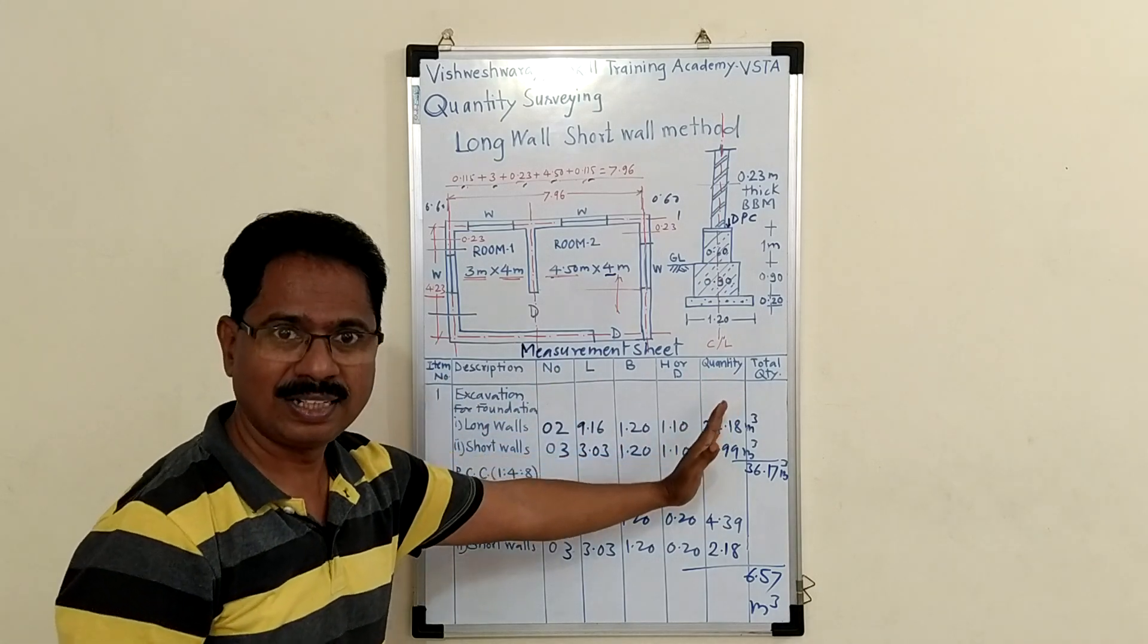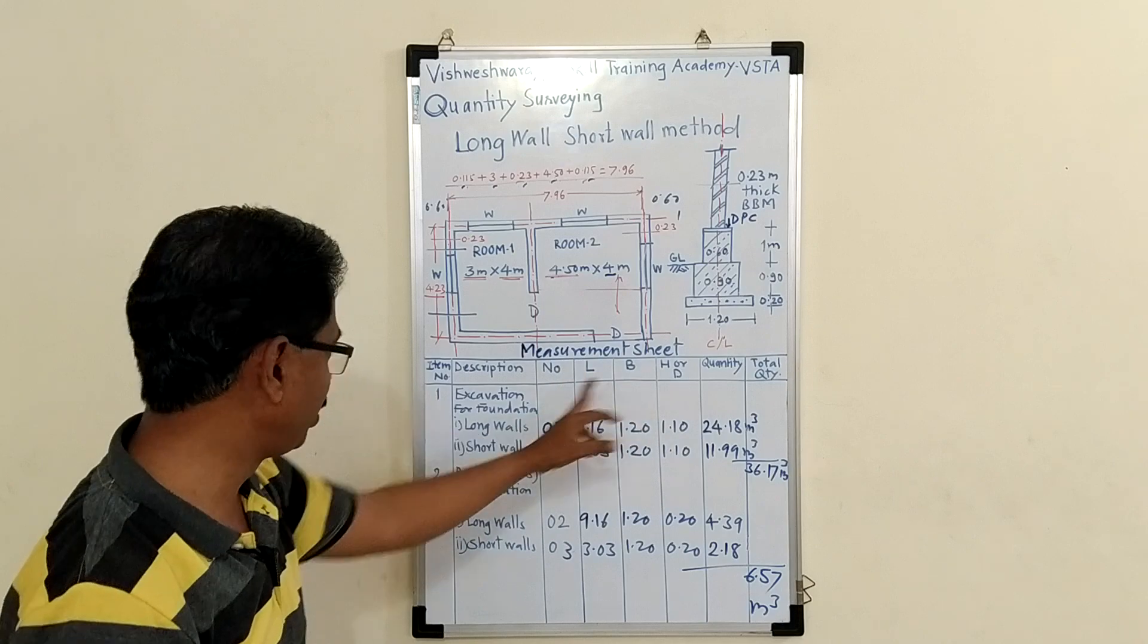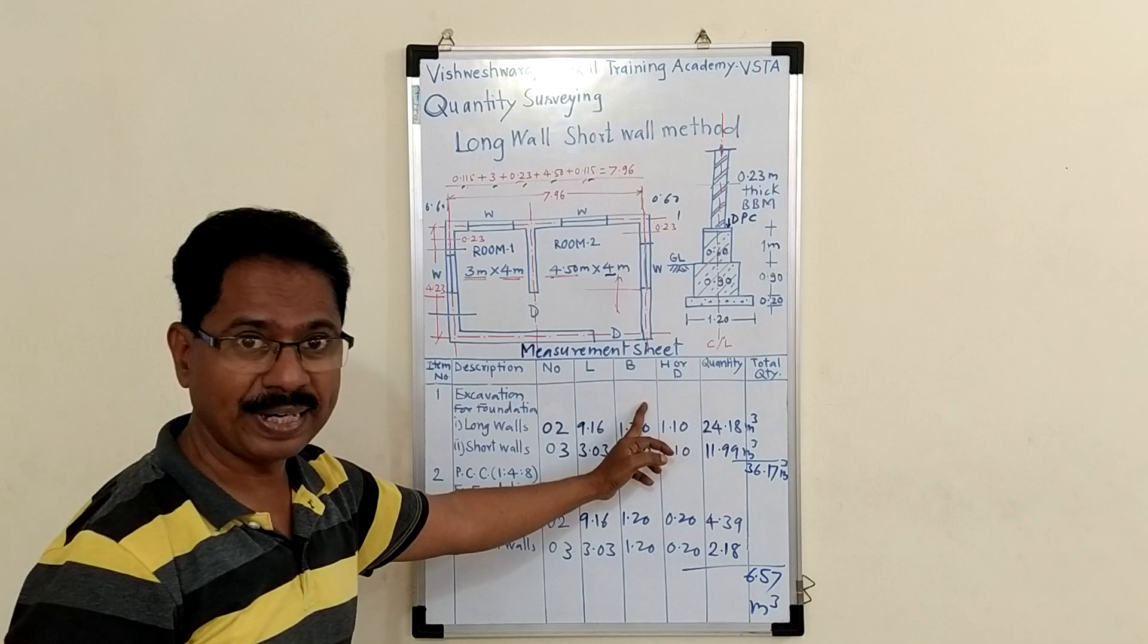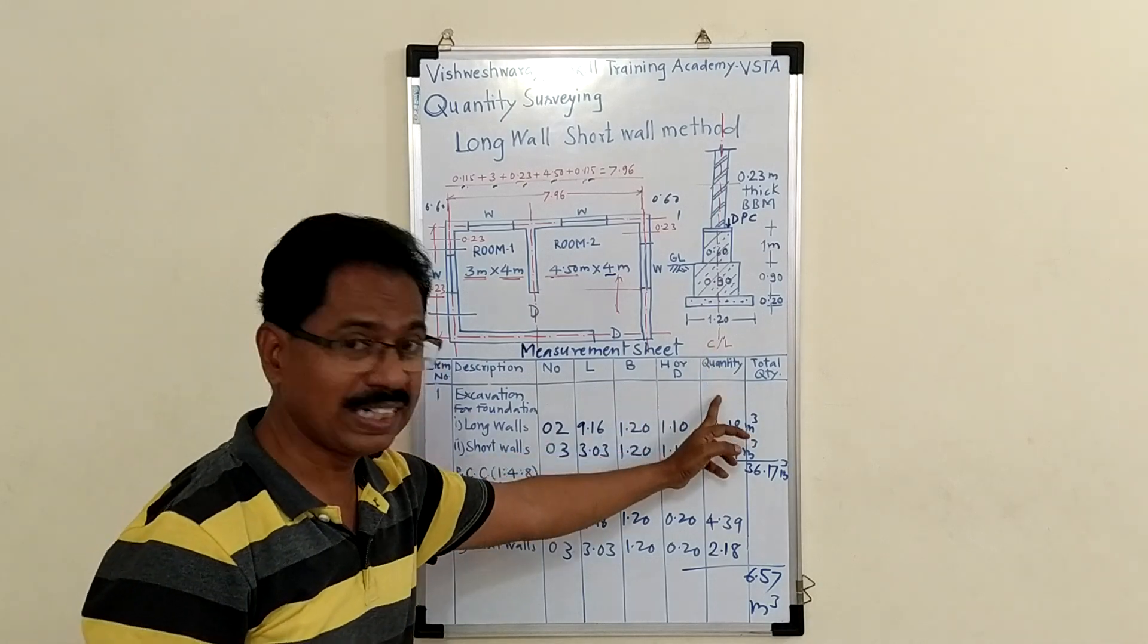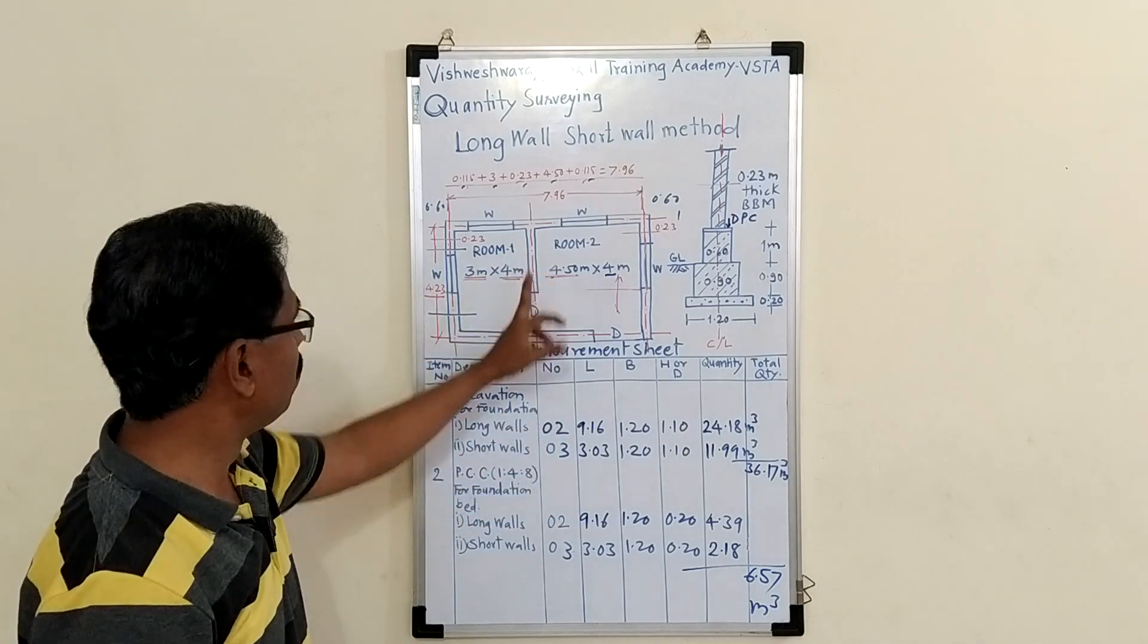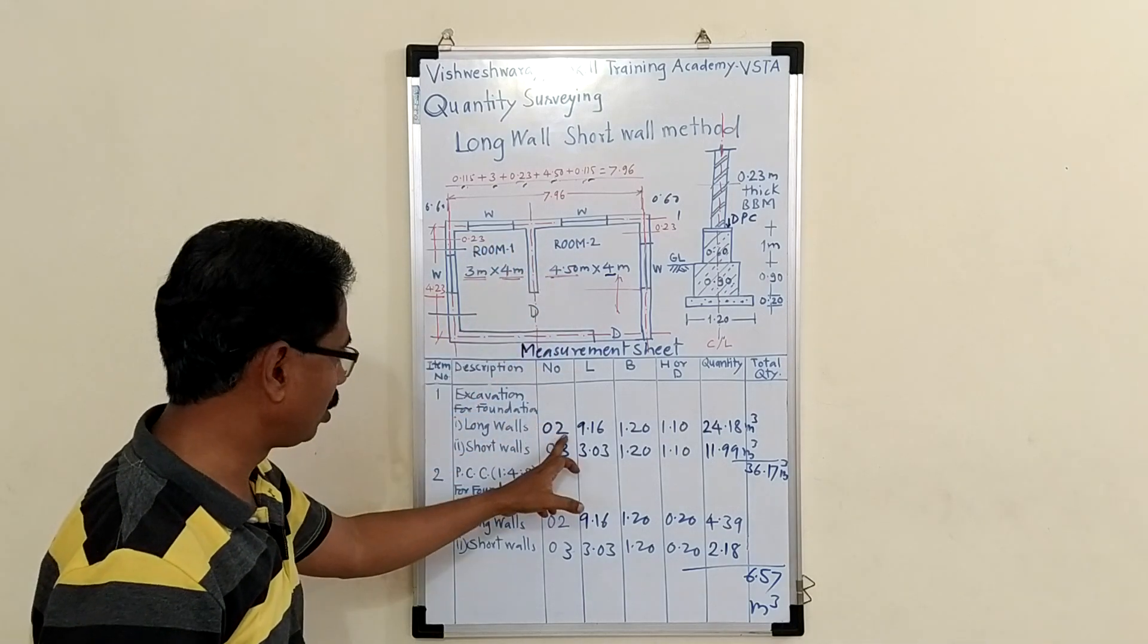Here are the columns in measurement sheet. Item number, description of item, number, length, breadth, height or depth, quantity and total quantity. So, two number of long walls.